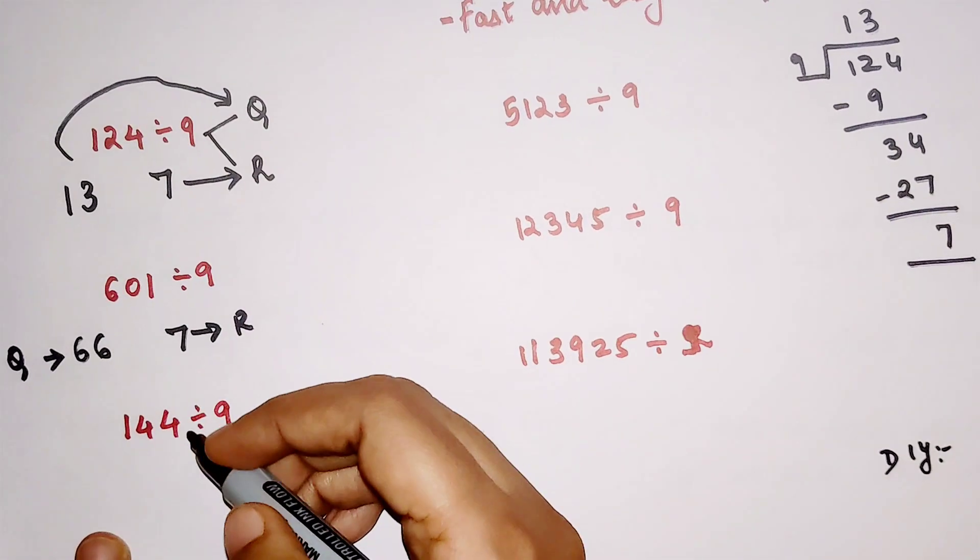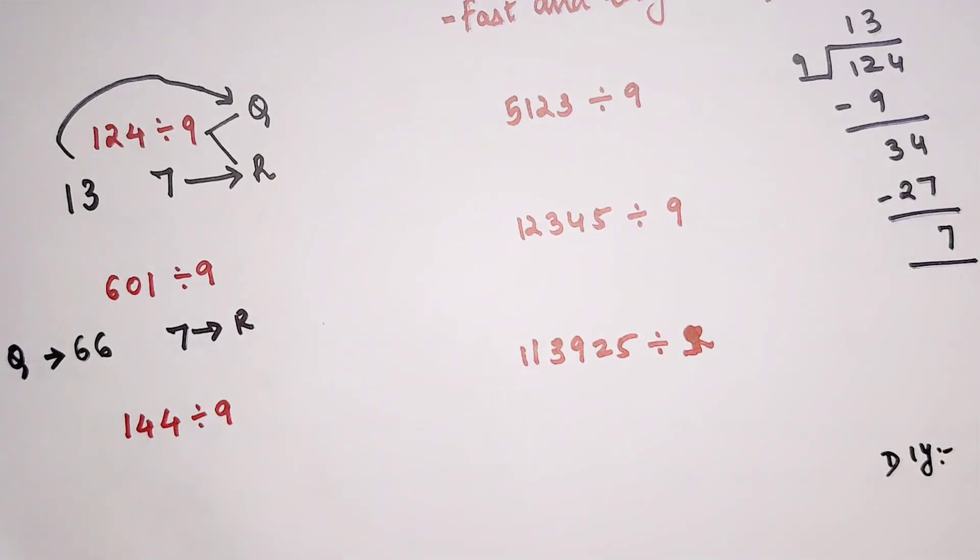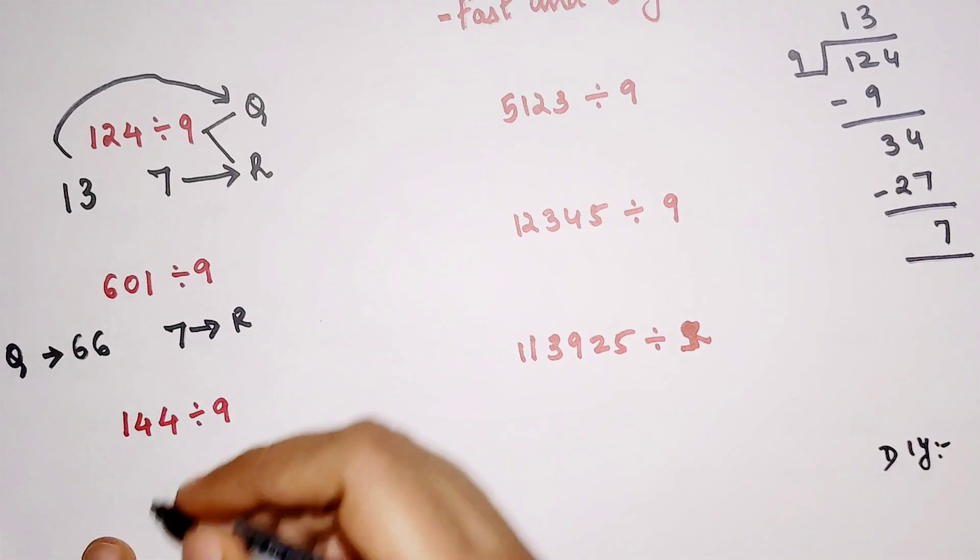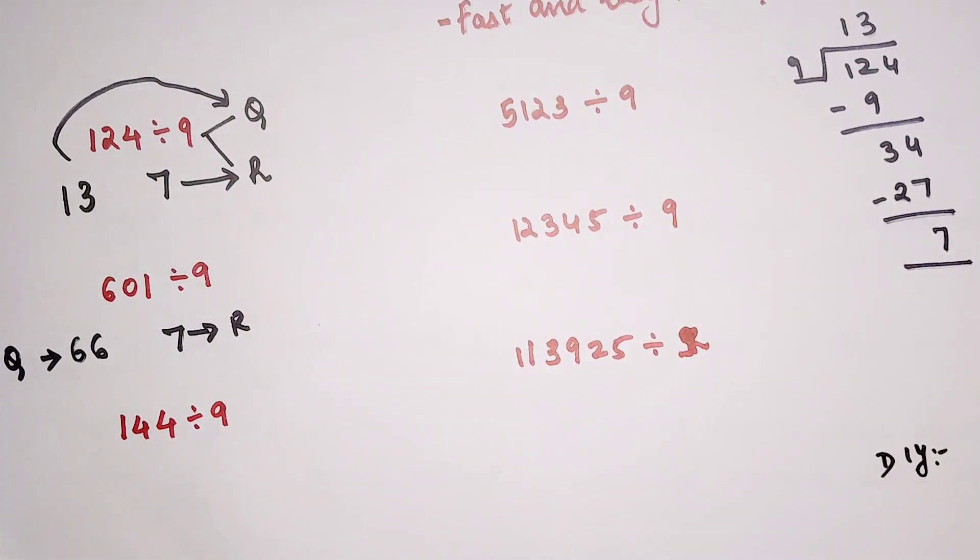So now, I am sure you must be wondering, for both of these examples there's a remainder. What happens when there is no remainder?